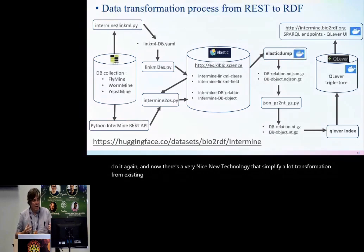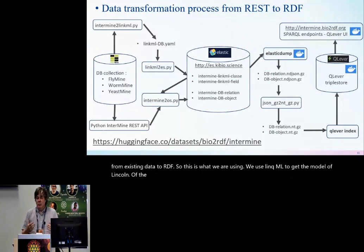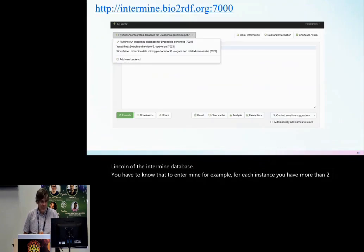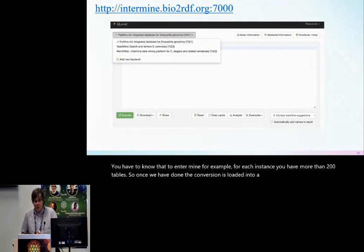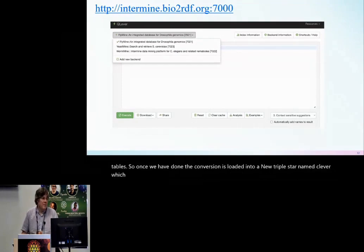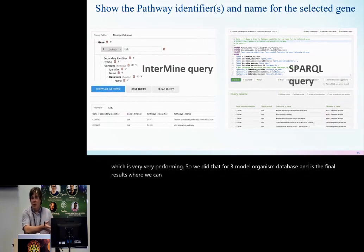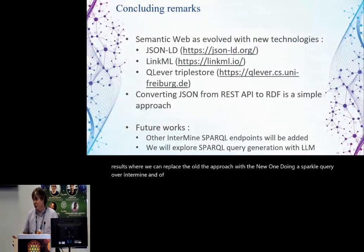We use LinkML to get the model of the Intermine database. Each Intermine instance has more than 200 tables. Once we have done the conversion, it's loaded into a new triplestore named Oxigraph, which is very high-performing. We did that for three model organism databases. Here are the final results where we can replace the old approach with the new one, doing a SPARQL query over Intermine and getting the same answer — which is the proof that the conversion works.